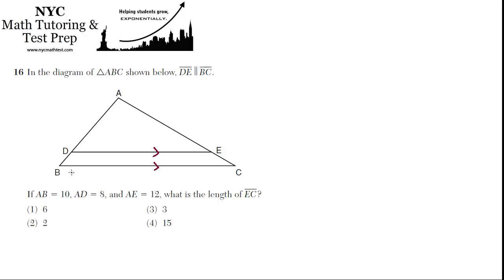If those are parallel, then triangle ADE is going to be similar to triangle ABC, right? Because if they're parallel, this angle is corresponding with this angle, and this angle is corresponding with this angle, and of course they share angle A. So you can see right off the bat these are going to be similar triangles.